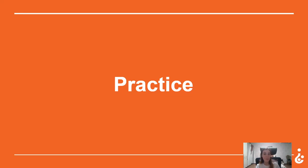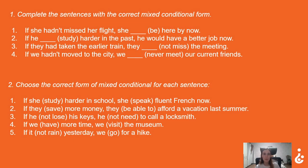Okay, it's time for practice. Here you should complete the sentences with the correct mixed conditional form. 'If she hadn't missed her flight, she'd be here by now.' 'If he studied harder in the past, he would have a better job now.' 'If they had taken the earlier train, they'd not miss the meeting.' 'If we hadn't moved to the city, we'd never meet our current friends.'